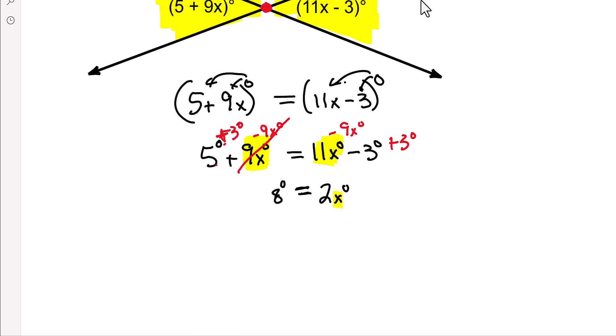5 degrees plus 3 degrees is 8 degrees. And now we have this multiplying 2, the inverse of multiplying is dividing. So x should equal 4 degrees, and now let's check. So 5 plus 9, 5 degrees plus 9 times 4 degrees, so that's 36 plus 5, 41 degrees.